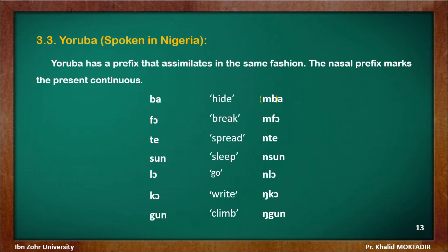The first verb has a bilabial, so the nasal prefix becomes bilabial. The next verb's first consonant is labiodental — in fact both ba and fo are labial — so the nasal prefix is bilabial. In the next three examples, the consonants are alveolar, explaining why the prefix is alveolar. In the last two examples, the first consonant of the stem is velar, and the nasal prefix picks up that velar point of articulation.